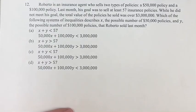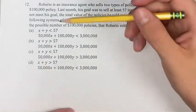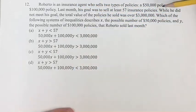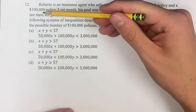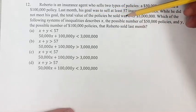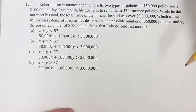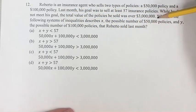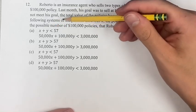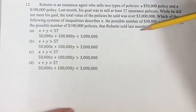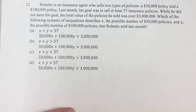Hello and welcome back to another video. In this problem we have Roberto who is an insurance agent who sells two types of policies: a $50,000 policy and a $100,000 policy. Last month his goal was to sell at least 57 insurance policies. He did not meet his goal, but the total value of the policies sold was over $3 million. We're asked what system of inequalities describes this situation where x is the number of $50,000 and y is the number of $100,000 policies.